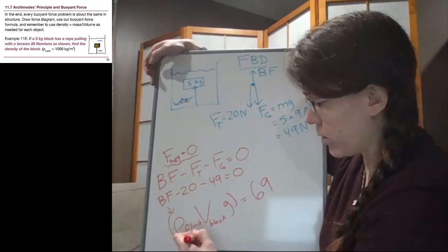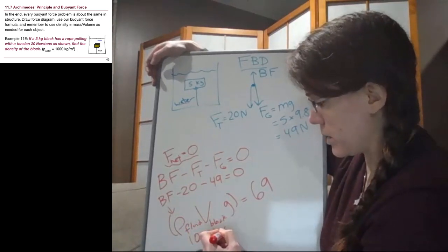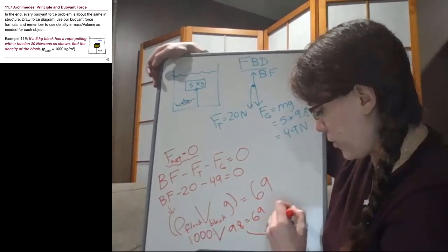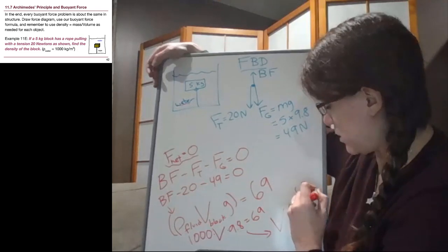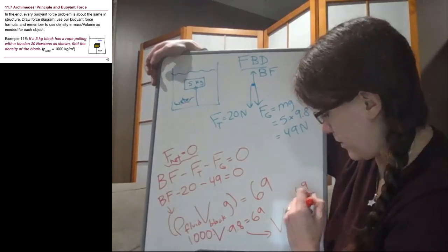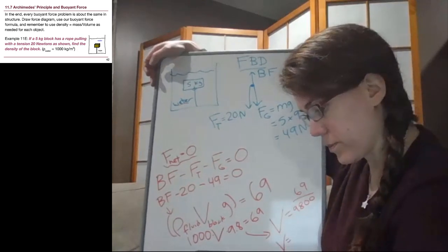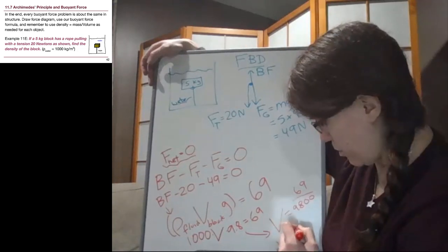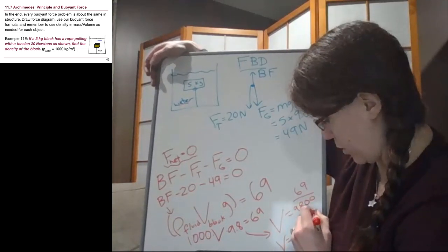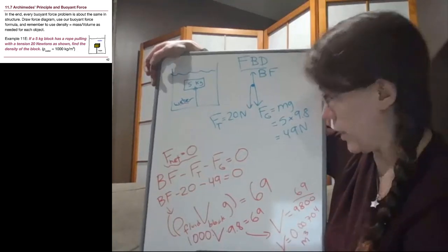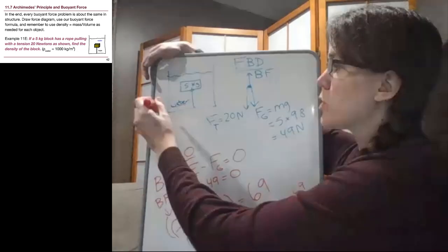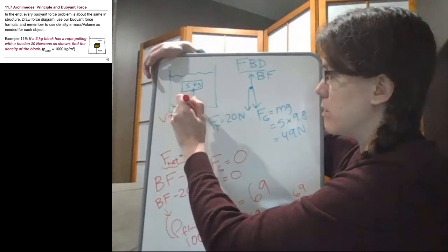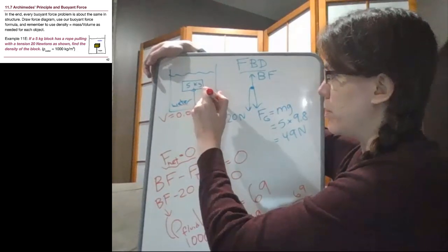So we have 1,000 times our volume, times 9.8. And so we can solve for our volume. It's going to be 69 divided by 9,800. And so that volume is 0.00704. I'm going to keep three significant digits for now. So what we have so far from all of this calculation is that the volume is 0.00704 cubic meters.